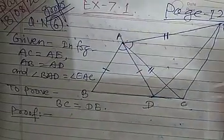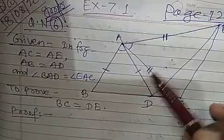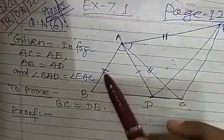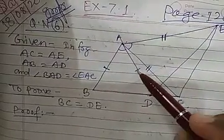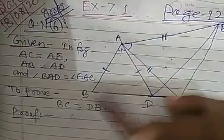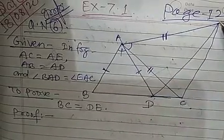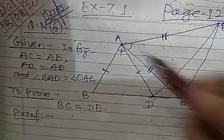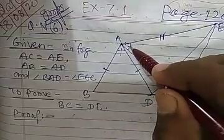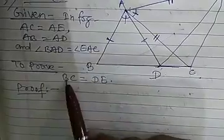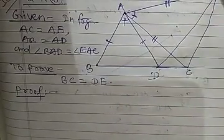in the figure, AC is equal to AE, and AB equal to AD. Also angle BAD is equal to angle EAC. We have to prove BC is equal to DE.